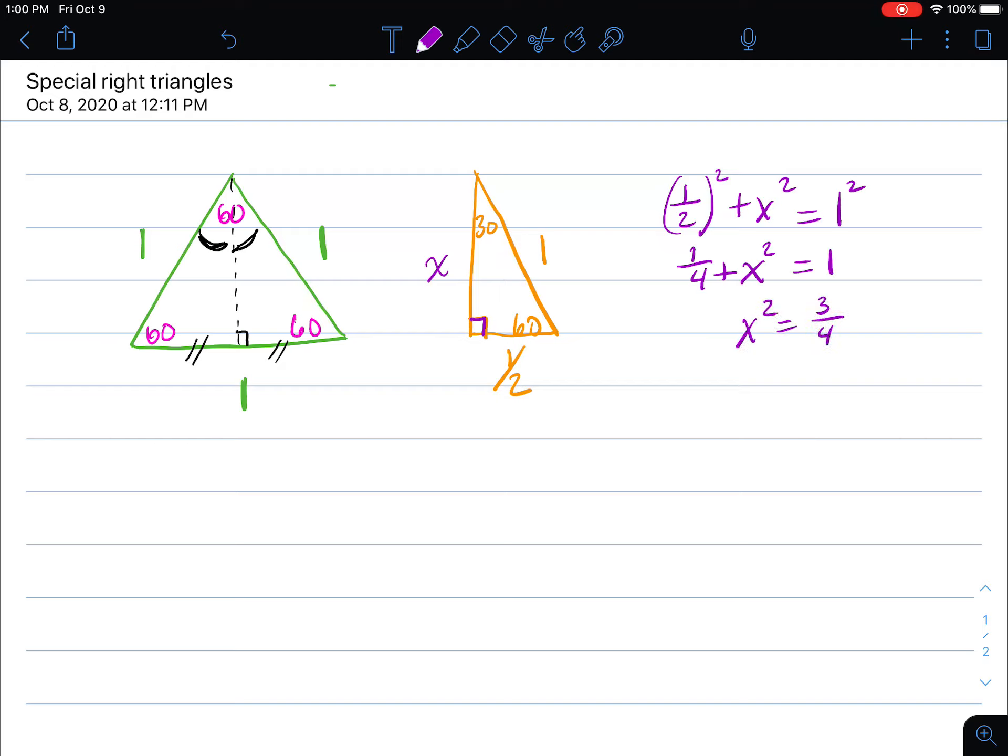So from this we can go ahead and continue to solve for x. We subtract a fourth from each side to get three fourths, and now we're going to take the square root of both sides. So x will equal plus or minus the square root of three over two, because of course the square root of four, that's a perfect square, is just two.